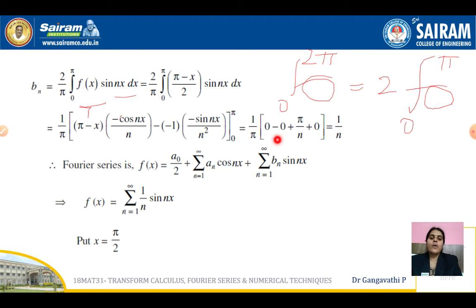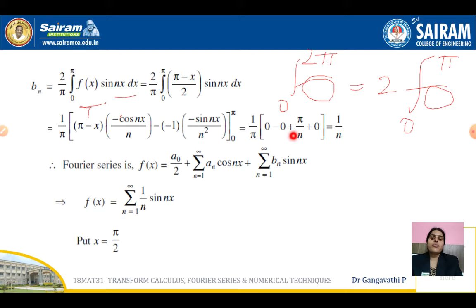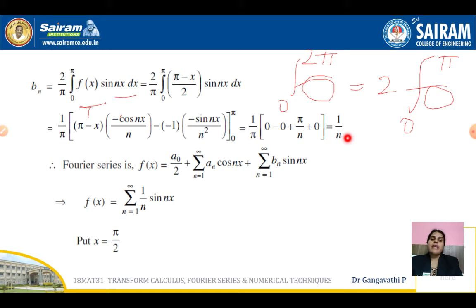Applying Bernoulli's rule: keep (π - x)/2 as the first function and integrate sin(nx) to get -cos(nx)/n. The next term has a minus sign, differentiation of (π - x)/2 gives -1/2, and we integrate -cos(nx)/n to get -sin(nx)/n². Differentiation of -1/2 becomes 0, so we stop here. The expression is evaluated between limits 0 and π.